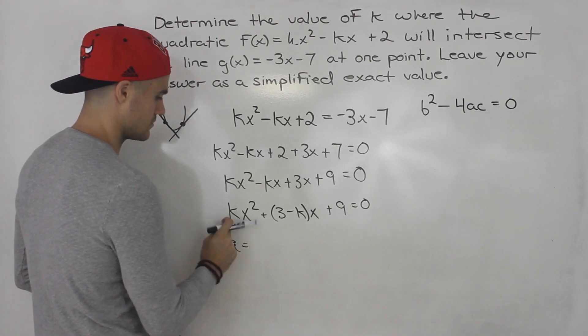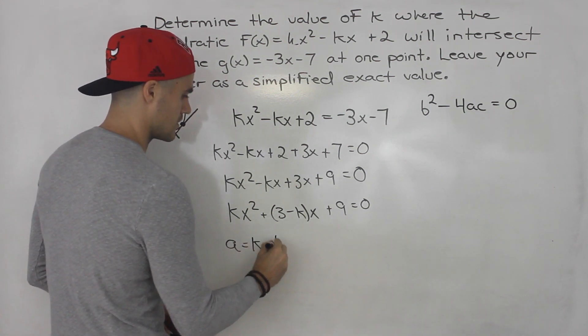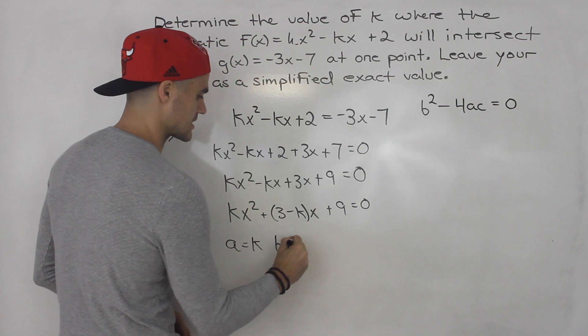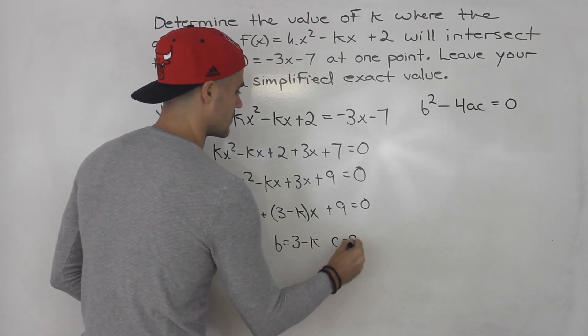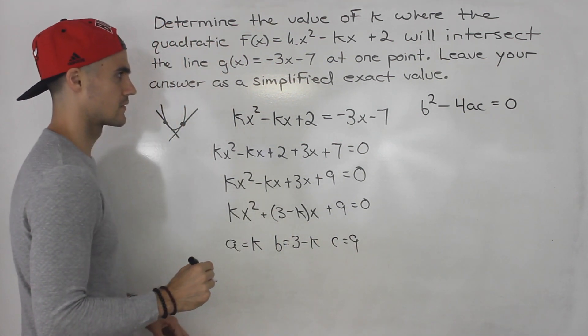And from here, notice the a value is k. The b value is 3 minus k. And then the c value is 9.